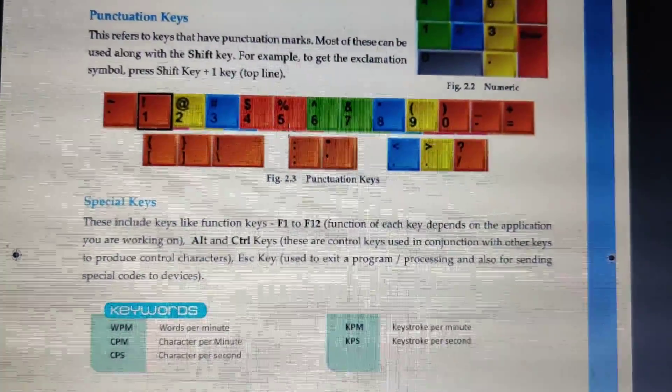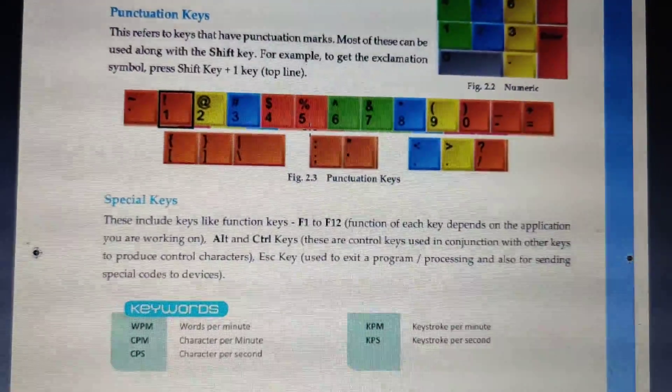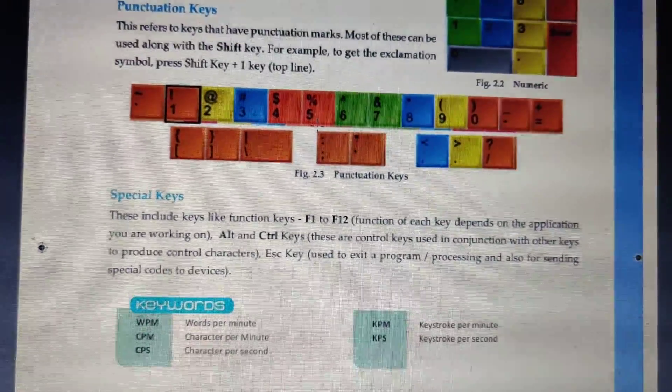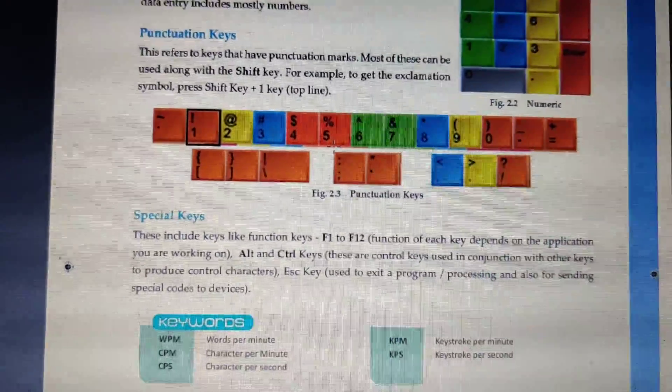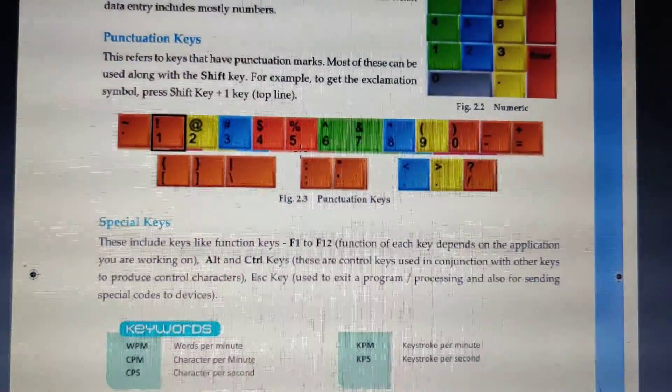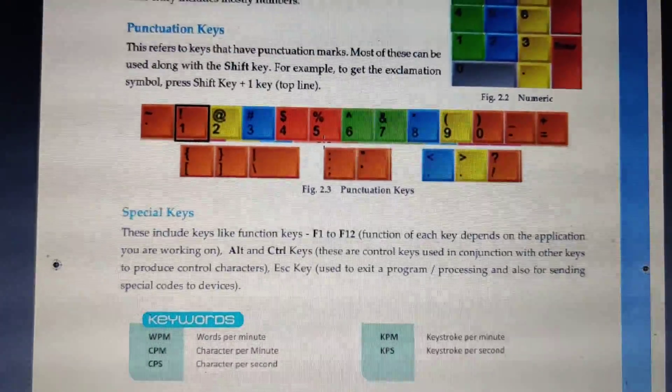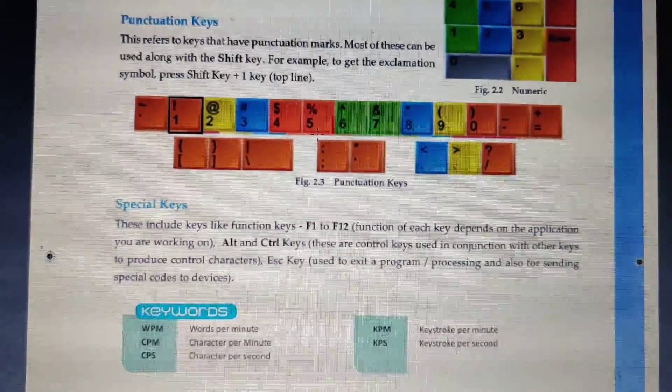So here, from F1 to F12, each key has their own function. But if we press with Alt or Control, it will also give other functions. For example, if we press Alt plus F4, then it will help us to exit from the program, and also it is used to shut down. It will give us different functions. So that's all for today. I hope you all are safe. Thank you.